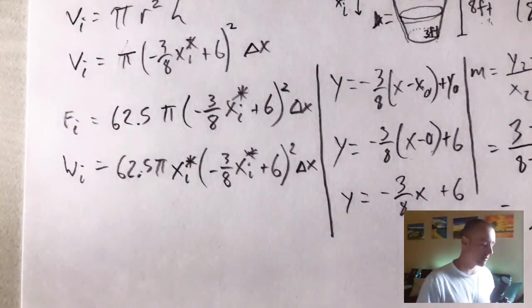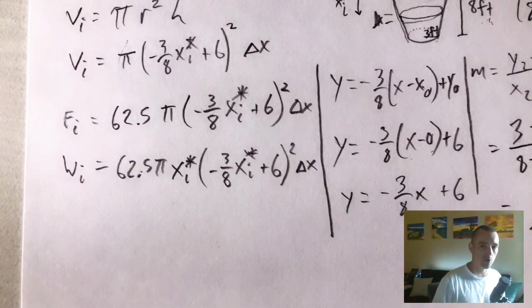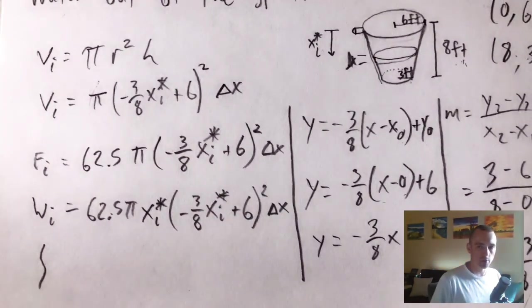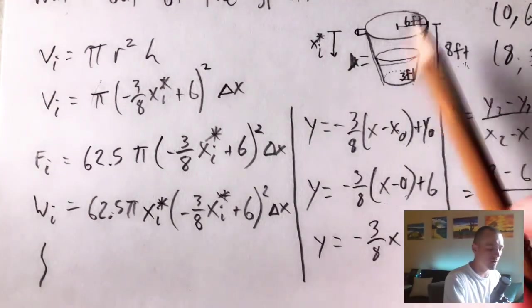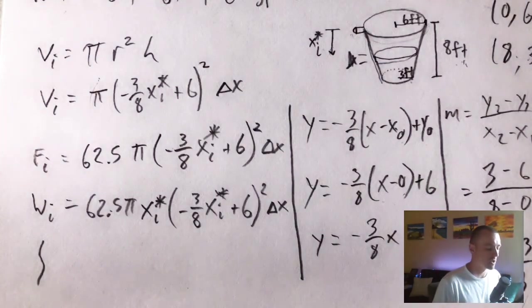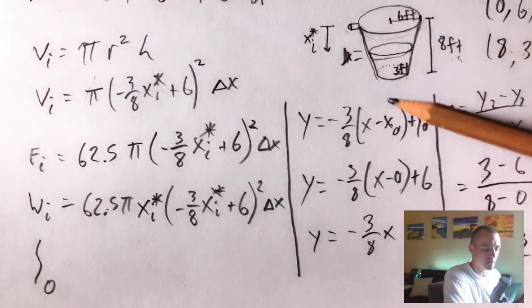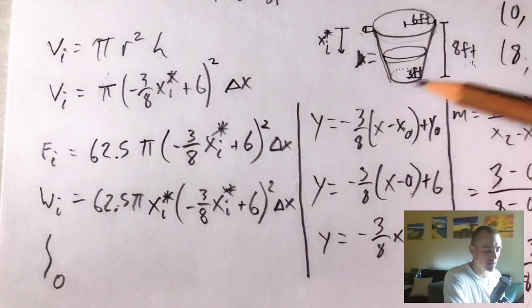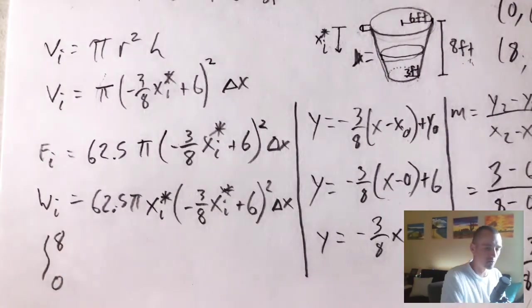That would be our equation for the work required to lift the Ith layer. Now what we need to do is sum up all those works to get the total work required to lift the whole tank of water out. To do that, we need to set up an integral where the bounds of that integral will be basically the bounds of all the different XI star values. When we're at the top of our tank, the top layer of water right up here at the very top, our XI star is zero because that layer is already at the height of the spout, we don't have to actually lift it. So it's being lifted zero feet. So our lower bound is going to be zero. And then as we go down through this tank, our very bottom layer of water, which would be the biggest value we would get for XI star, is going to be lifted eight feet. So our XI star is going to go from zero to eight, meaning the bounds of this integral are going to be zero to eight.